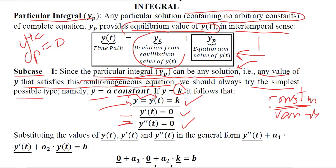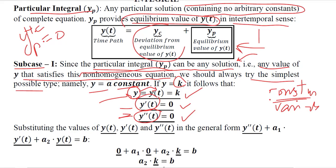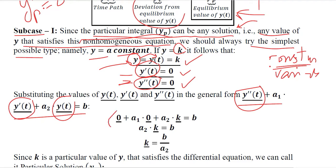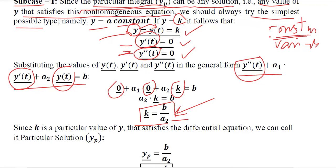Since we have the original function, the first order derivative, and the second order derivative, we can substitute these values into the standard form of the differential equation. Both derivatives are 0 and the original function equals K. Simplifying, we find that K equals B over A2, which is indeed a constant since B and A2 are both constant values — a constant term and a constant coefficient.